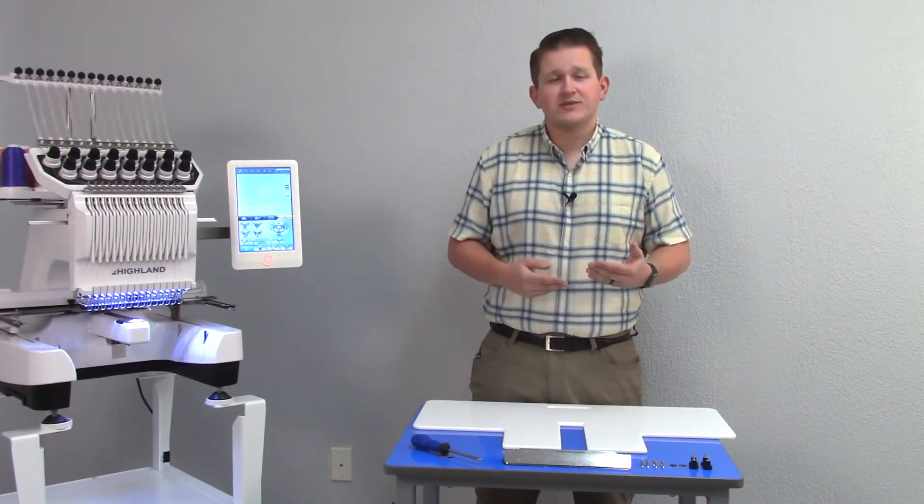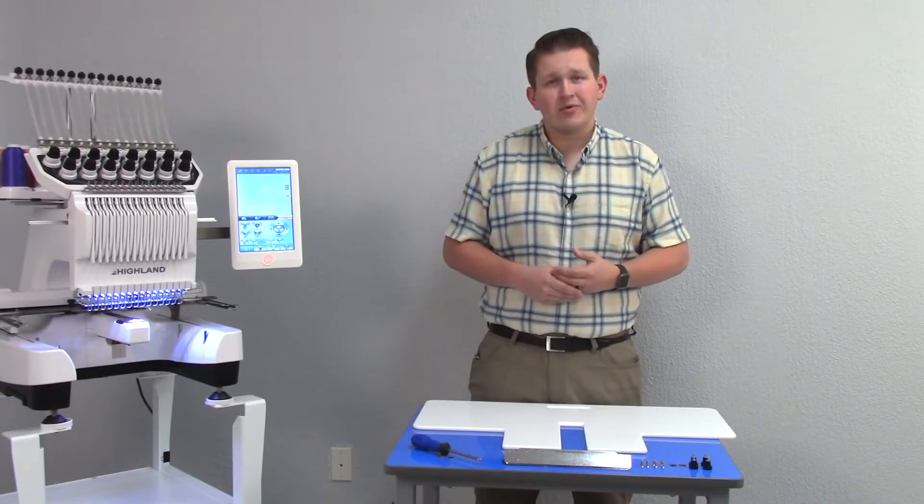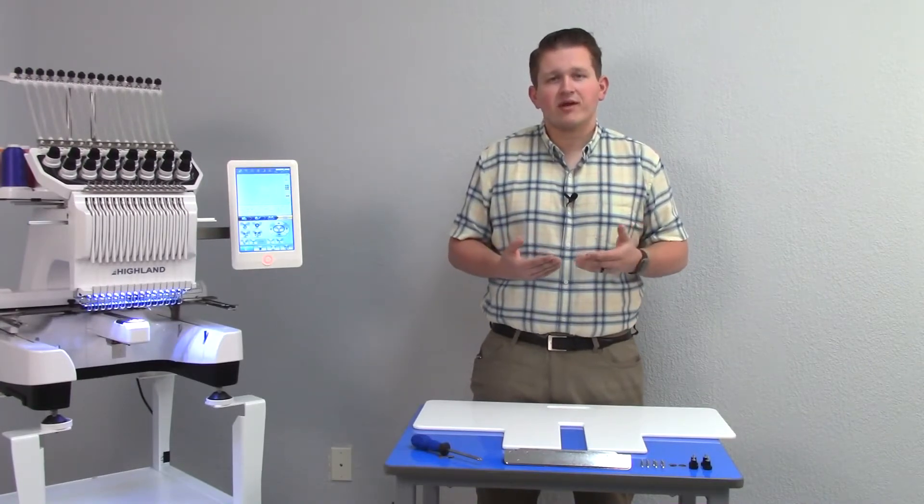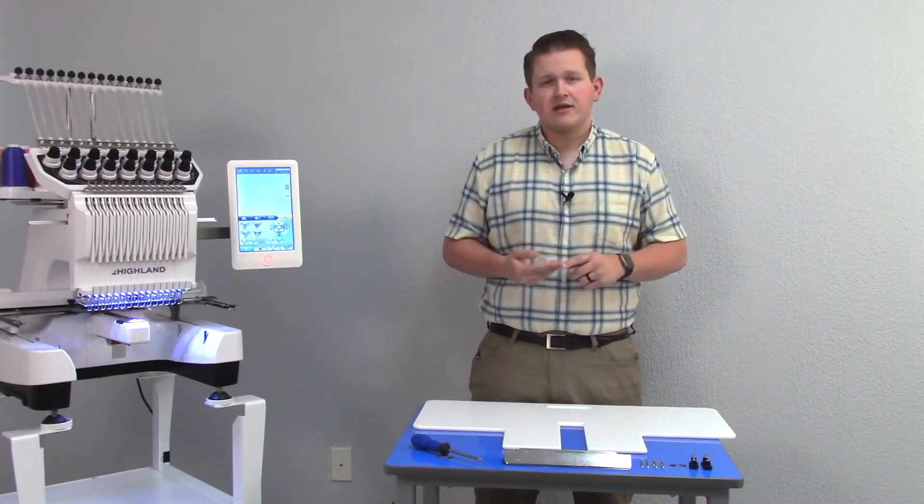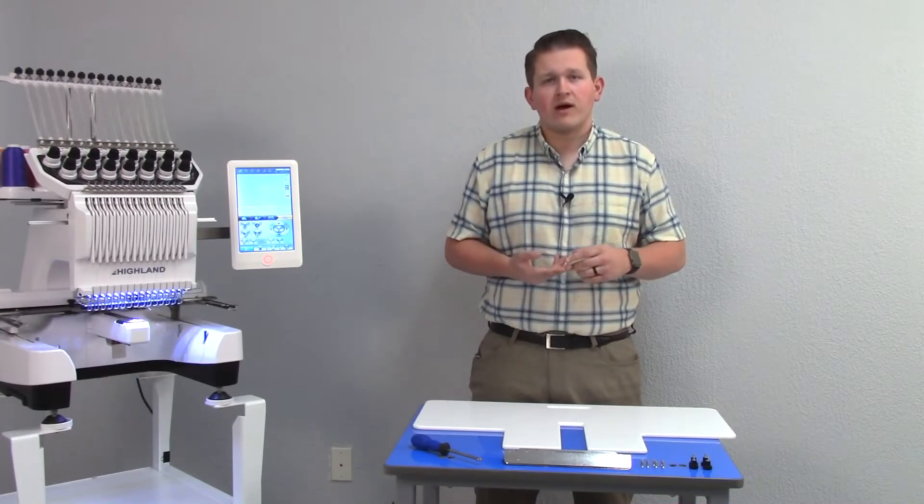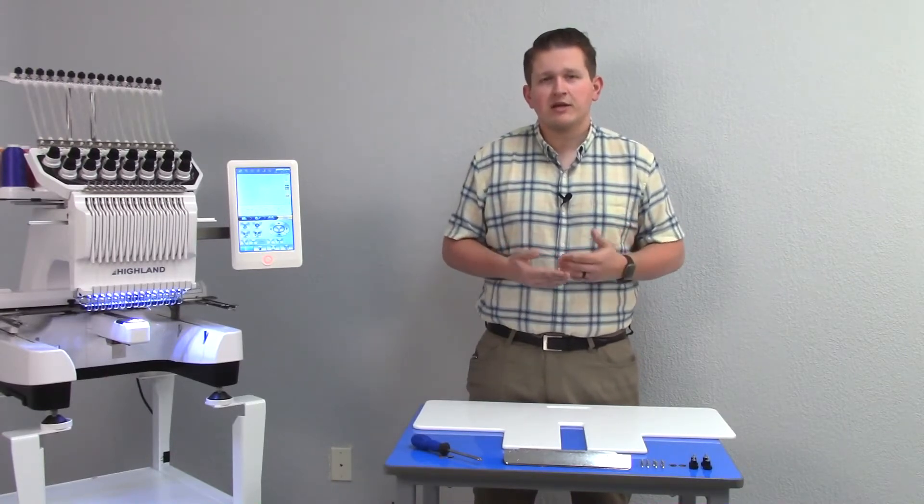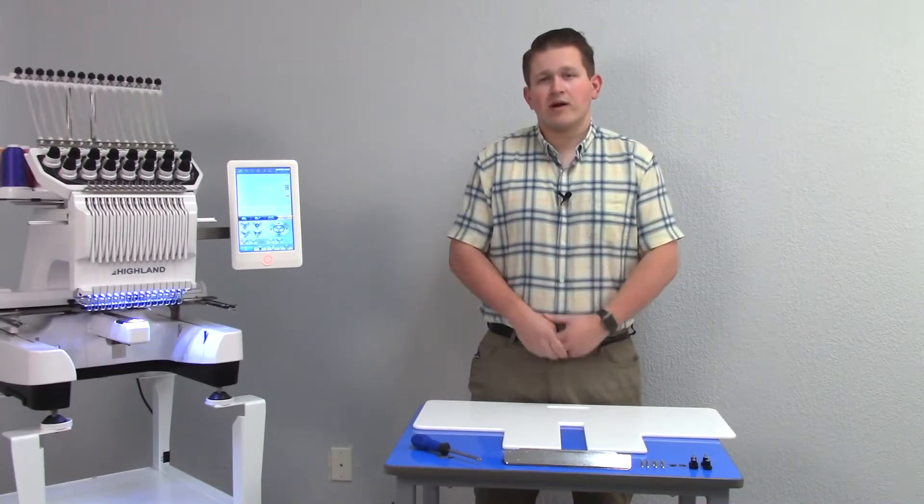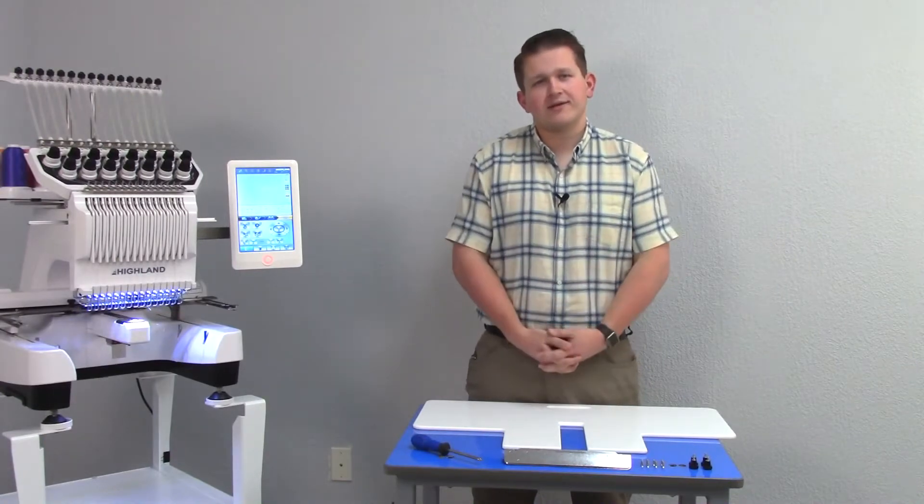When sewing on those materials, you can add this table on the machine to support the weight of that fabric and prevent bad sew outs. You can prevent the hoop from falling apart while you are running the machine and prevent unwanted wear and tear which can come from sewing on those heavy materials.